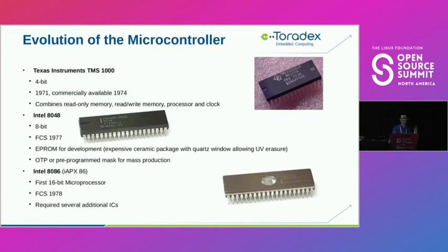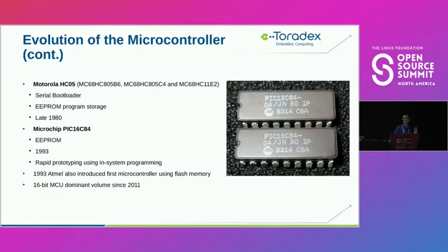The microcontroller started with the Texas Instruments TMS 1000, a 4-bit device in 1971. Later came the Intel 8048, an 8-bit one in 1977, and then the Intel 8086, the first 16-bit device in 1978. The Motorola HC05 was quite common and notably had a serial bootloader allowing EEPROM use for program storage. Later, the Microchip PIC in 1993 allowed rapid prototyping with in-system programming.